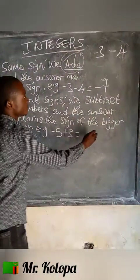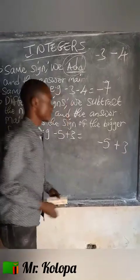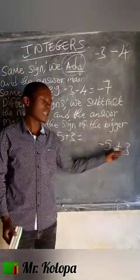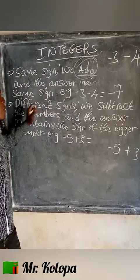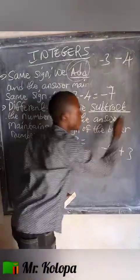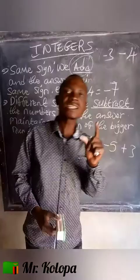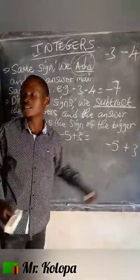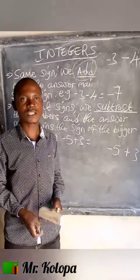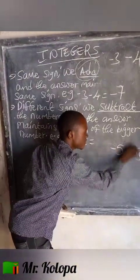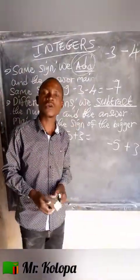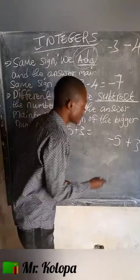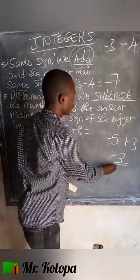Let's look at the next one. 5 is having a negative, and 3 is having a positive. So these two numbers are having different signs. Under different signs, we said you are supposed to subtract. When you subtract, your answer is supposed to maintain the sign of the bigger number. So in this case, we are going to say 5 minus 3, which gives you 2. We have two signs here — a negative on 5. Since 5 is bigger than 3 and it is having a negative, the answer is going to be negative 2.